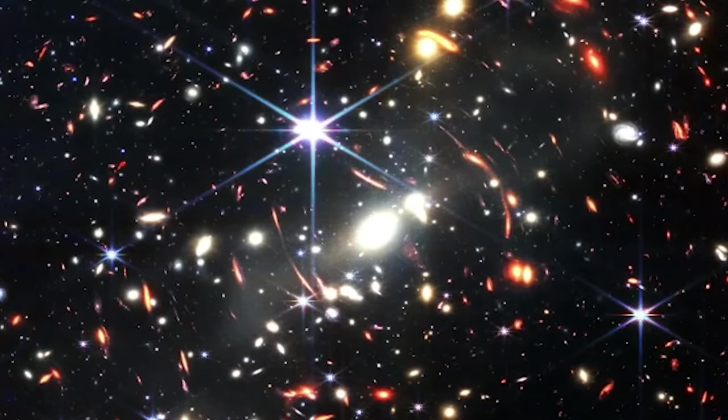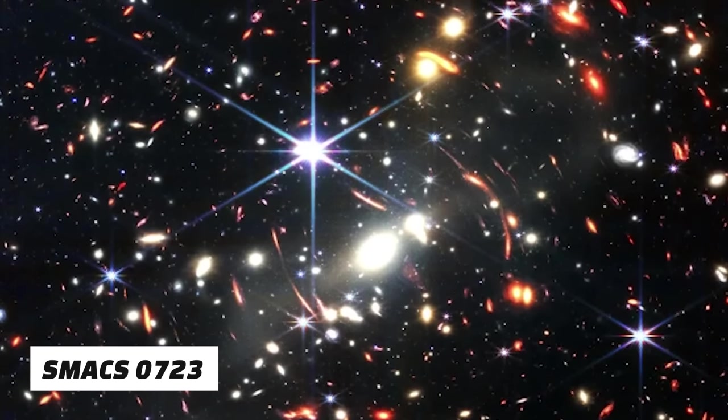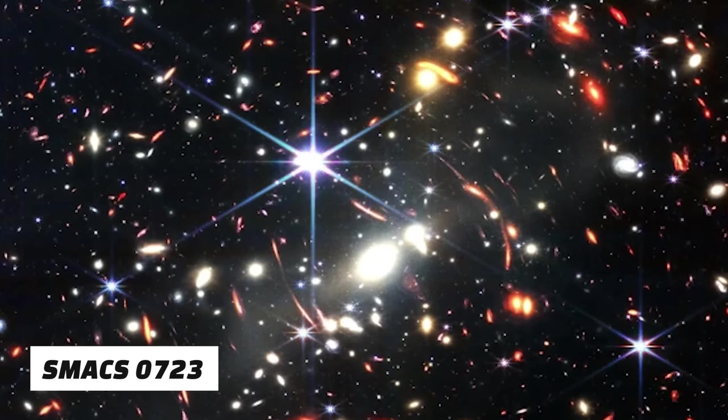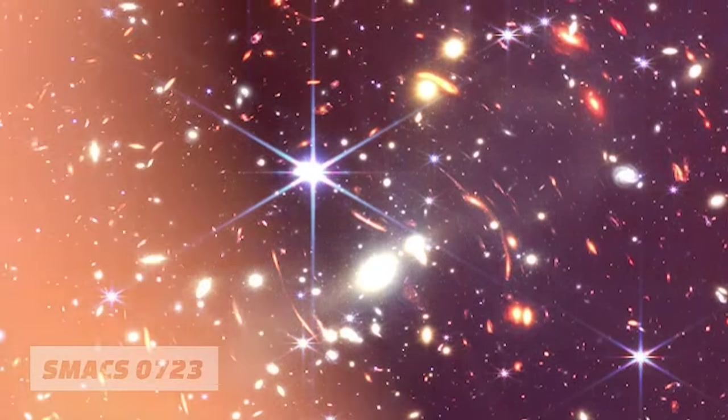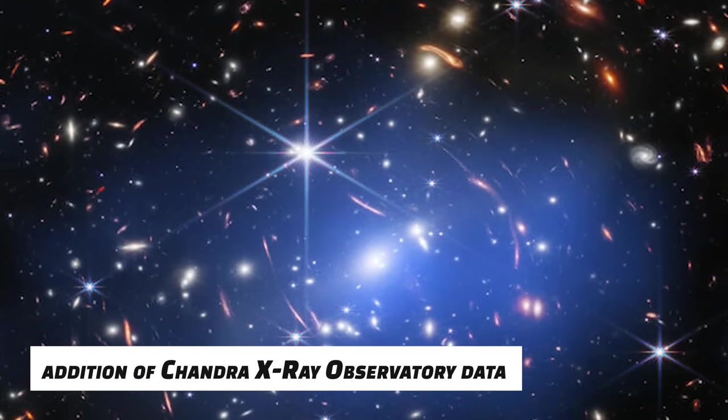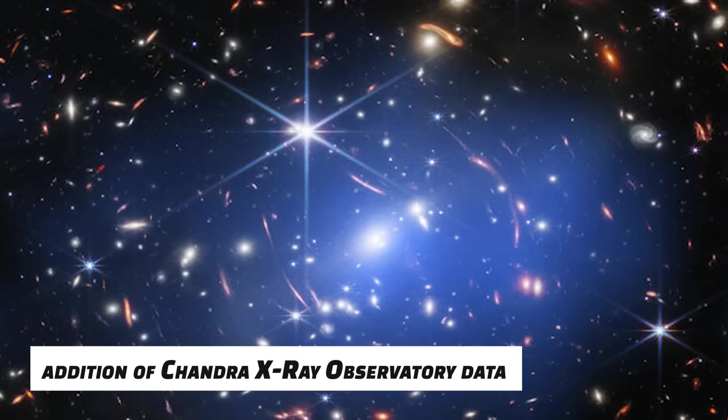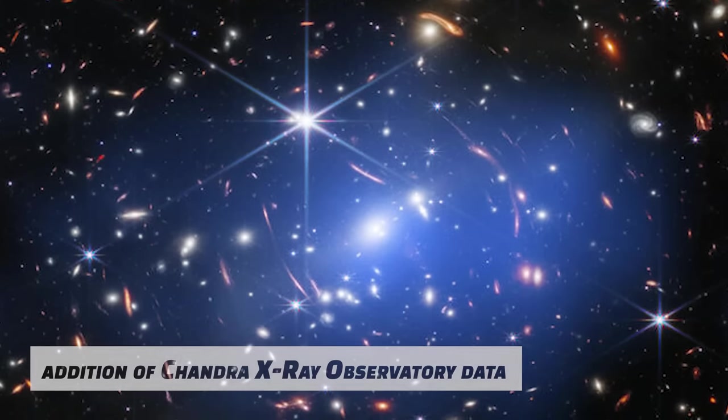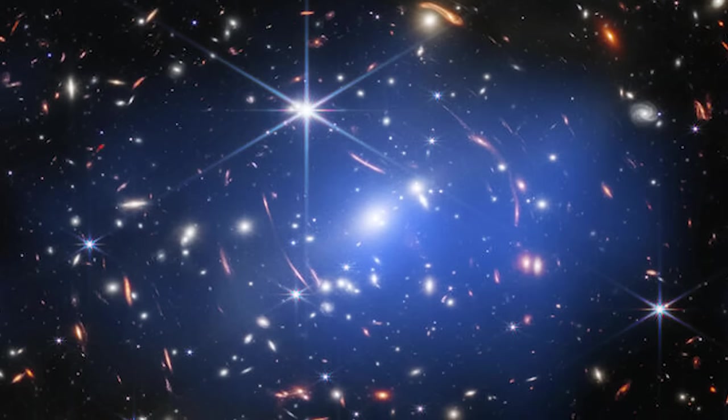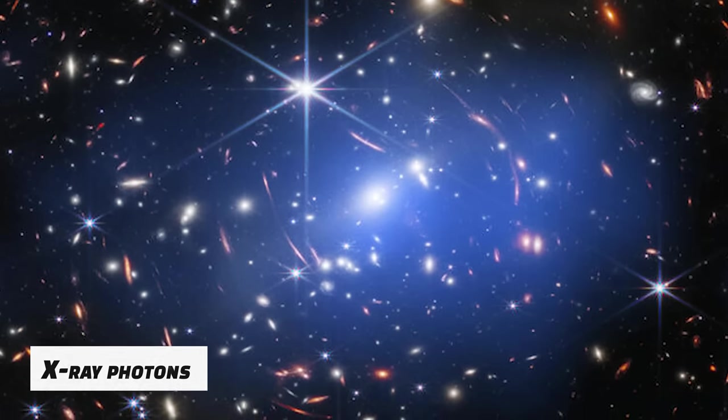This image of the galaxy cluster SMACS-723 captured by the James Webb Telescope incorporates gravitational lensing. With the addition of Chandra X-ray Observatory data to this James Webb Telescope image of SMACS-723, superheated gas, which is only visible with the aid of X-ray photons, can be seen clearly.